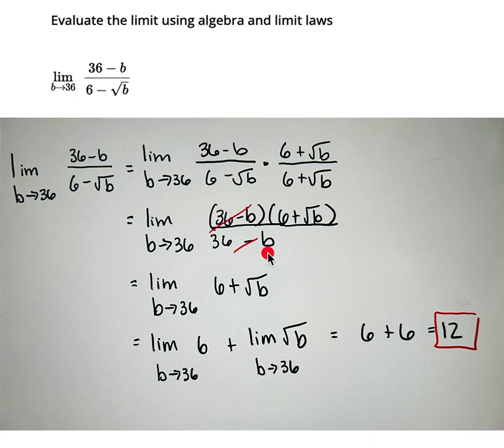So I have 36 minus b. Now I notice that this is the same as this so I'm not going to bother foiling because I'll just have to refactor again, because this way I can cancel the 36 minus b on the top and the bottom and what I'm left with is 6 plus the square root of b.